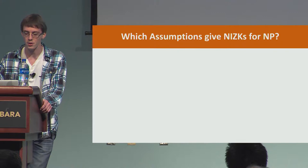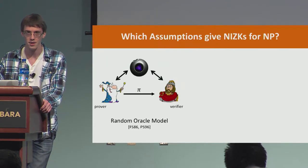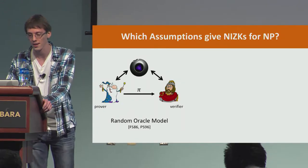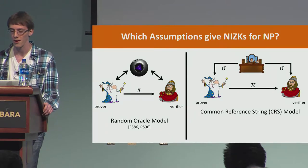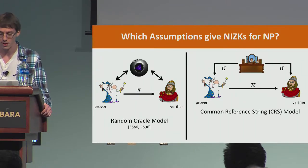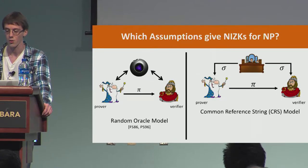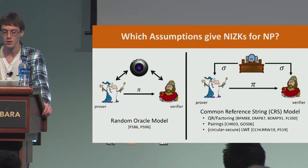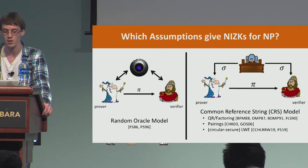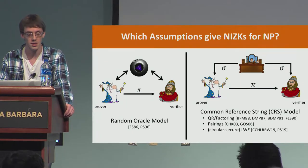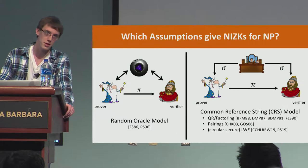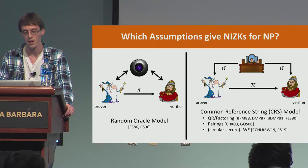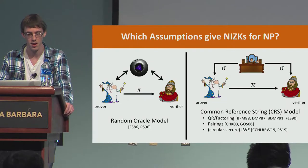This is a non-interactive zero knowledge proof or argument if soundness is only computational. We can construct it if the prover and verifier have access to a random oracle, or if they have access to a common reference string under certain computational assumptions. It's been known for a long time that you can do this under QR, factoring assumptions, or from bilinear maps. And just this year, it was shown that variants of the learning with errors assumption — first with circular security and then without — also suffice.